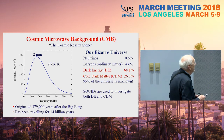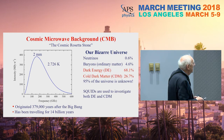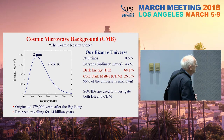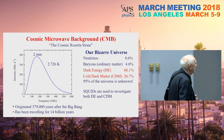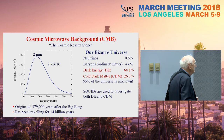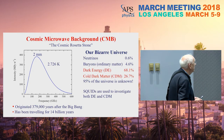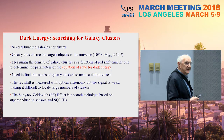We live in a rather bizarre universe. Ordinary baryonic matter — that's us — is only about 5% of the universe. About two-thirds is dark energy, and about a quarter is cold dark matter, so we have no clue as to what most of the universe is. SQUIDs are being used to investigate both dark energy and cold dark matter, and I've had a small role in both from the SQUID end. First, let's talk about dark energy and searching for galaxy clusters.